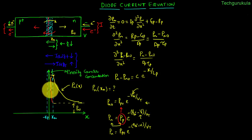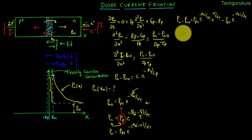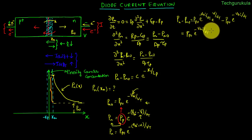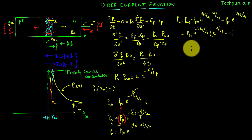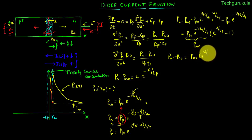So we can write this expression as p_n = p_p0 · e^(−(V_bi − v)/V_T). Our interest is finding p_n minus p_n0. We can write p_n − p_n0 by taking p_p0 · e^(−V_bi/V_T) as common, giving us the factor (e^(v/V_T) − 1). We know that p_p0 · e^(−V_bi/V_T) is nothing but p_n0. So we can write p_n − p_n0 = p_n0 · (e^(v/V_T) − 1).